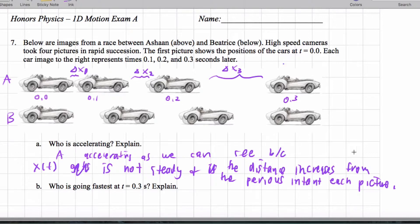And all I'm saying here is that delta x1 is less than delta x2 is less than delta x3, and that's how we know it's increasing. And then for Beatrice, her delta x's are all the same.